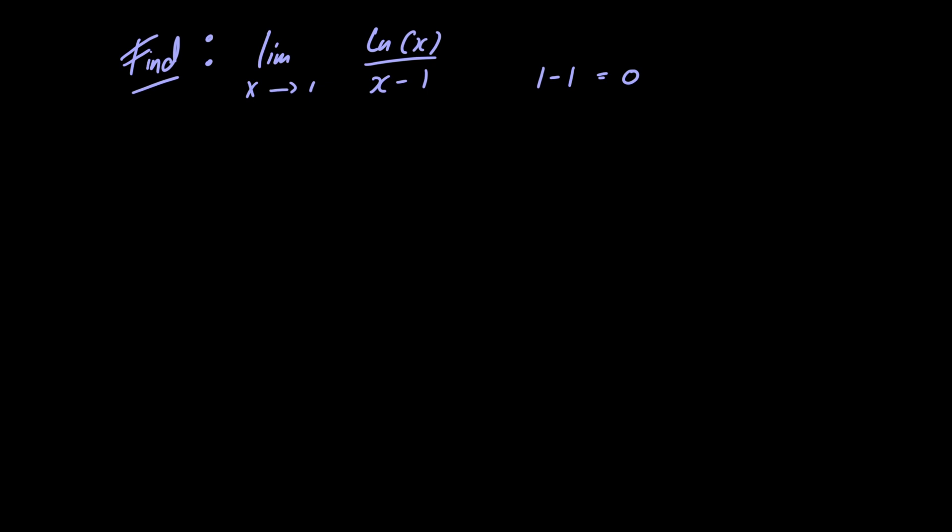The method that we're going to use is called L'Hôpital's Rule. L'Hôpital's Rule basically says that if you have a limit as x approaches c of f of x divided by g of x and f and g are both differentiable at c and they're of indeterminate form 0 over 0 or plus or minus infinity over plus or minus infinity, then we can rewrite the limit as the limit as x approaches c of the derivative of f of x divided by the derivative of g of x.